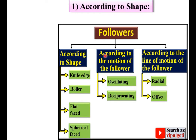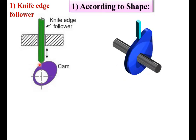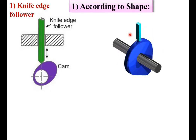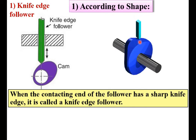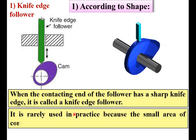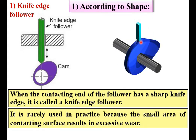First, according to the shape of the Follower: the knife edge Follower. Here you can see it has a sharp knife edge, and the knife edge Follower has line contact between the CAM and Follower. It is rarely used in practice because the small area of contacting surface results in excessive wear.